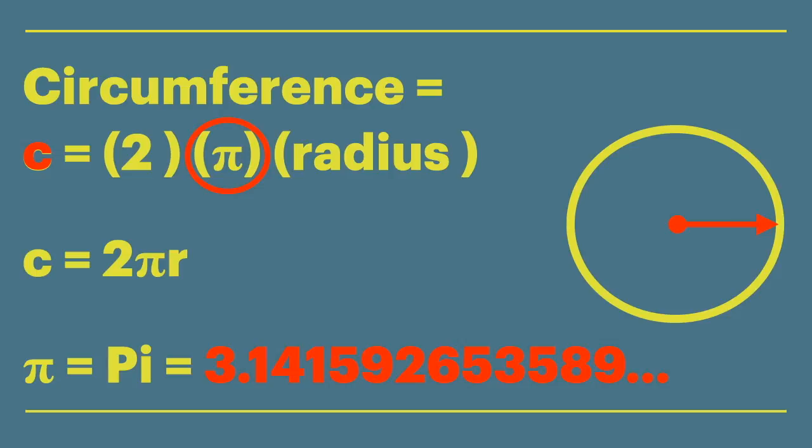So because 2 is always 2 and pi is always 3.14, all we need to know is the circle's radius to find its circumference.